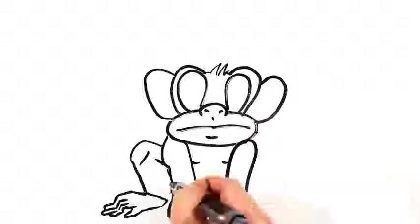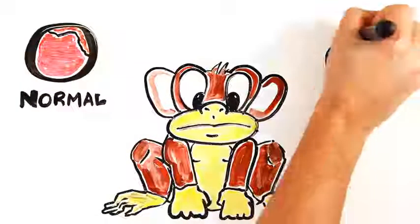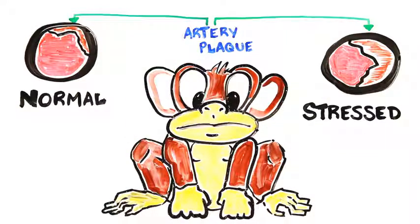When looking at the arteries of macaque monkeys, those under significant stress have more clogged arteries. This prevents blood from getting to the heart quickly during stress and can ultimately lead to heart attacks.